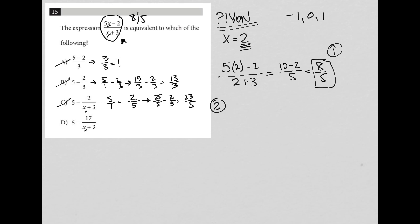Lastly, choice D: I'm going to make this 5/1 minus 17 over, again, 2 plus 3, which is 5. 5/1 becomes 25/5 to have a common denominator. So 25/5 minus 17/5. 25 minus 17 is 8 over 5, and therefore choice D is the best answer.